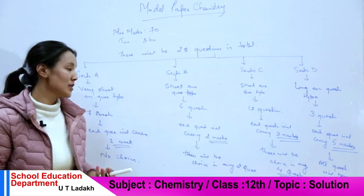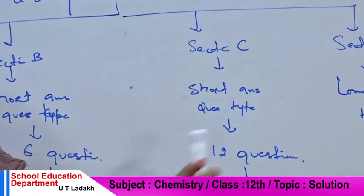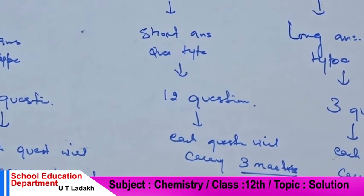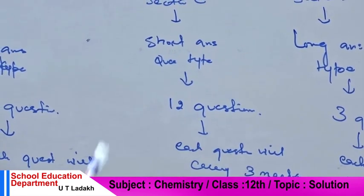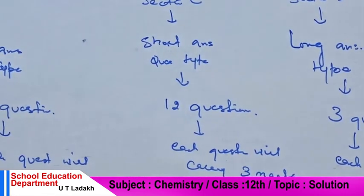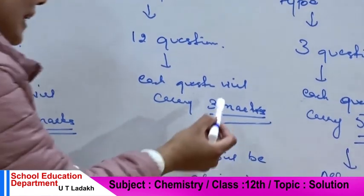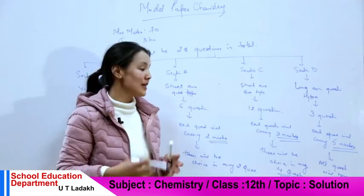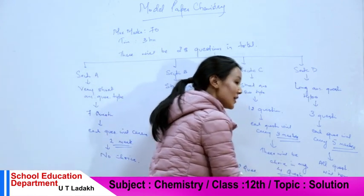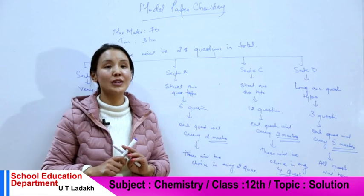The next section is Section C. This section is also a short answer type question, but we have three questions. There is a maximum question option — out of the questions provided, you have a choice. Out of those questions, you attempt four questions out of the options given, and you have a choice between question 4 and question 3.